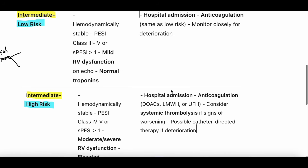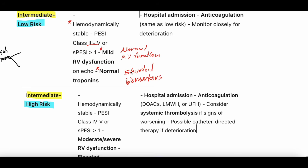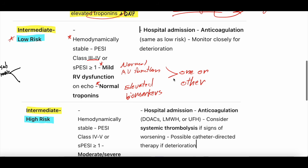Intermediate low risk is another patient who is hemodynamically stable, with a PESI class of maybe three or four, and you have either mild RV dysfunction or elevated biomarkers — but not both. So for instance, you could have an elevated troponin with normal RV function, or mild RV dysfunction with a normal troponin. It's one or the other. Intermediate high risk is where you have both RV dysfunction and elevated biomarkers.